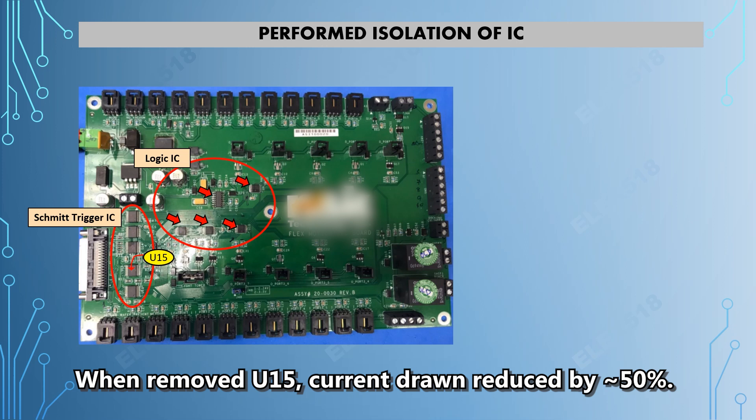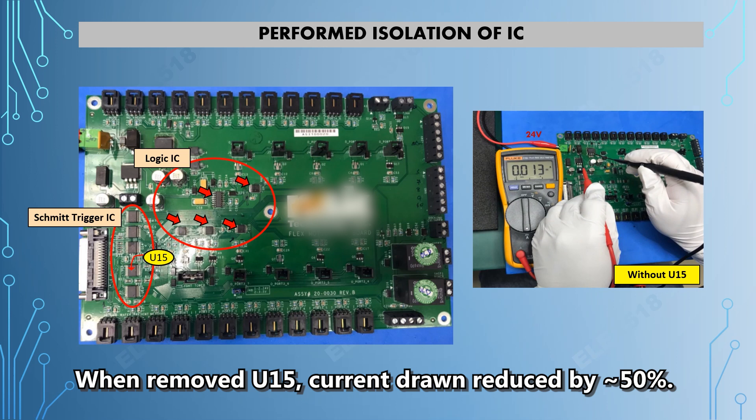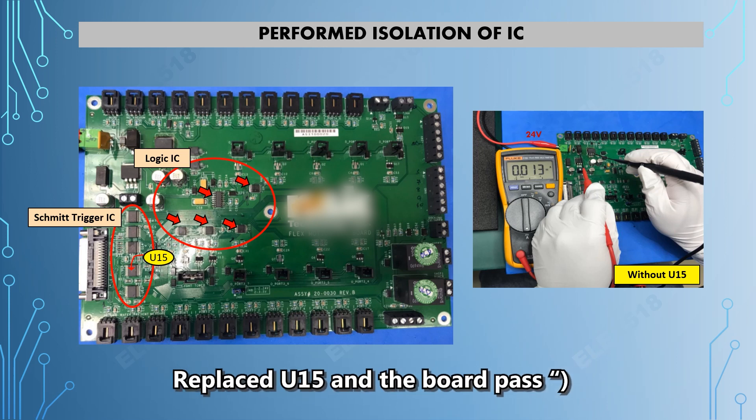During the isolation, only when I removed U15 did the current consumption drop from 25 milliamps down to 13 milliamps. Almost 50% of current on the R1 line was consumed by U15. For me, this isn't normal.